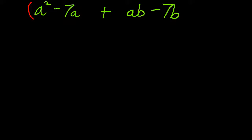So I'm going to group the first two terms, and I'm going to group the second two terms, and then I'm going to factor the first two terms by the greatest common factor. Both of these terms have an a in them, so I'll pull out an a.